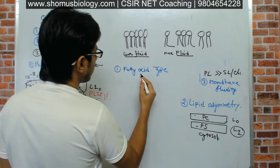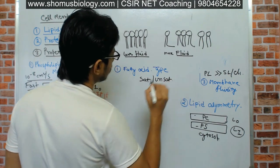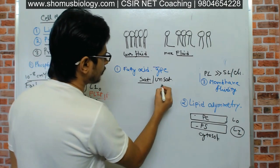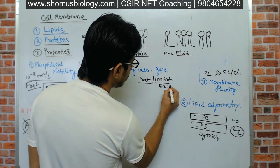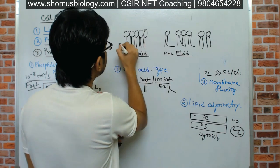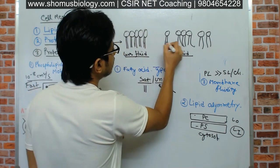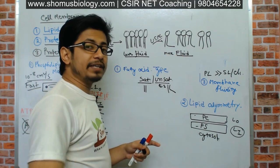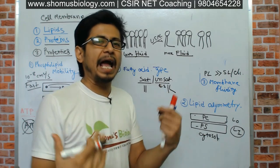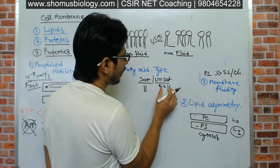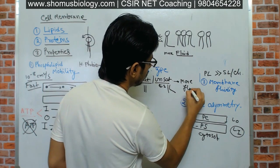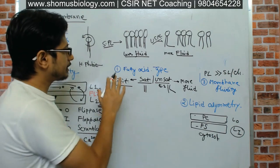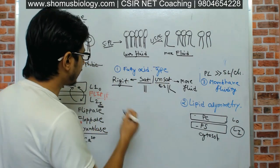There are two types of fatty acids: saturated and unsaturated. Saturated fatty acids have no cis double bonds, while unsaturated fatty acids have cis double bonds, which create a bend in the fatty acid tail. Unsaturated phospholipids have a bend in one of their tails, creating more gaps between phospholipids. Therefore, more unsaturation means more fluid, and more saturation means more rigid membrane.